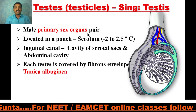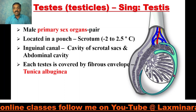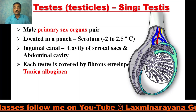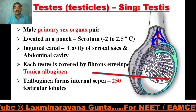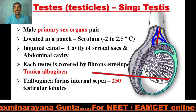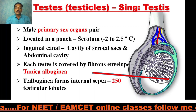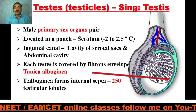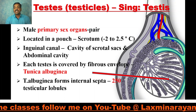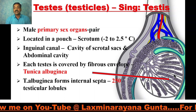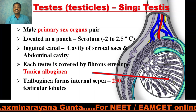Each testis is covered by a fibrous envelope called the tunica albuginea. This tunica albuginea forms internal septa by protruding inside the testis, forming chambers called testicular lobules. Nearly 250 lobules are formed in each testis.